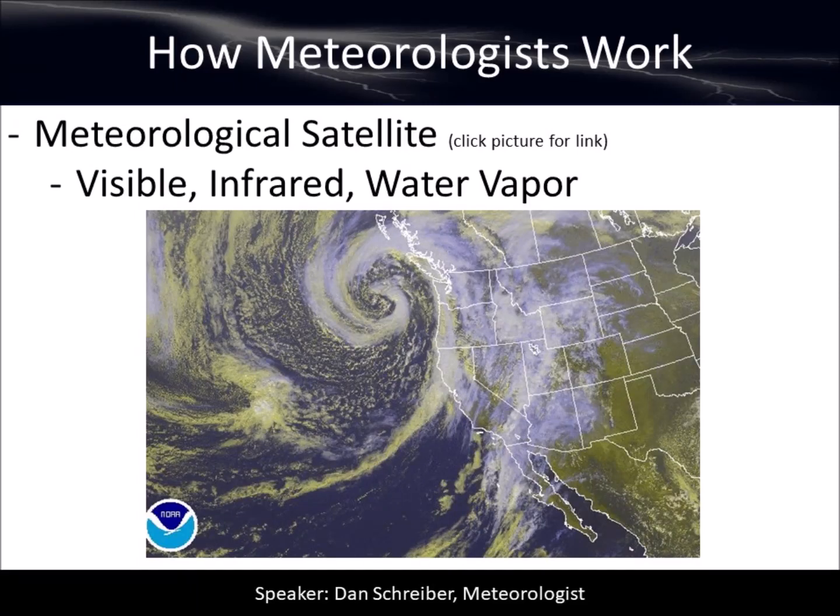Some of the tools we use are really cool. Meteorological satellite is awesome. We can look at anywhere in the world at any point in time and see where the clouds are, what the temperature of the cloud tops are, or where the moisture is in the atmosphere. Anytime of day, anywhere in the world, we can see this sort of stuff, and it's a very good clue as to what we can expect.